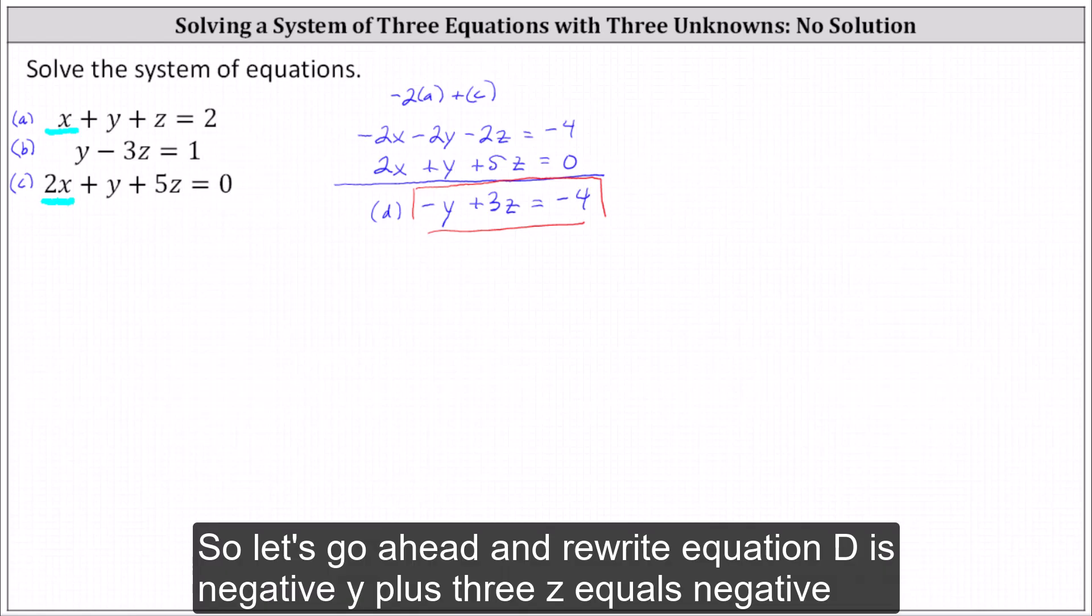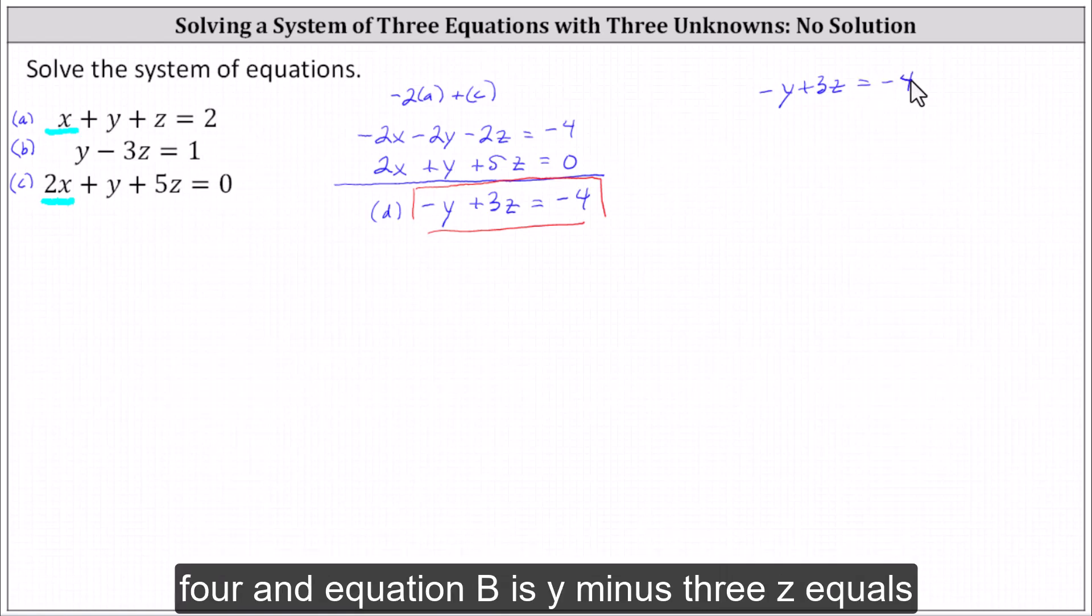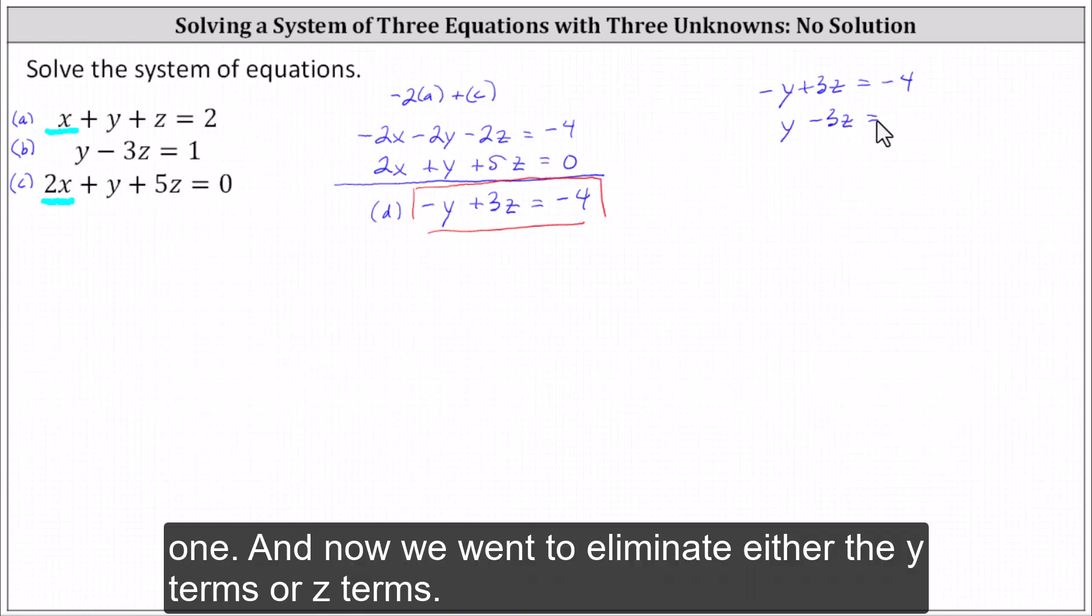So let's go ahead and rewrite equation D as -y + 3z = -4, and equation B is y - 3z = 1.